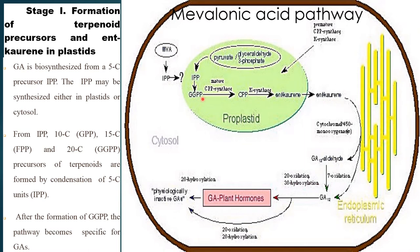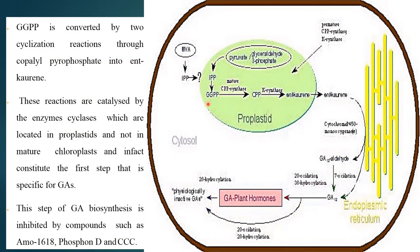After the formation of GGPP, the pathway becomes specific for gibberellic acid synthesis. GGPP, that is geranylgeranyl pyrophosphate, is converted by two cyclization reactions through copalyl pyrophosphate into ent-kaurene. The reaction is catalyzed by the enzyme cyclase, which is located in the proplastid, not in the mature chloroplast, and constitutes the first step specific for gibberellic acid. This step of gibberellic acid biosynthesis is inhibited by compounds like AMO-1618, Phosphon-D, or CCC.